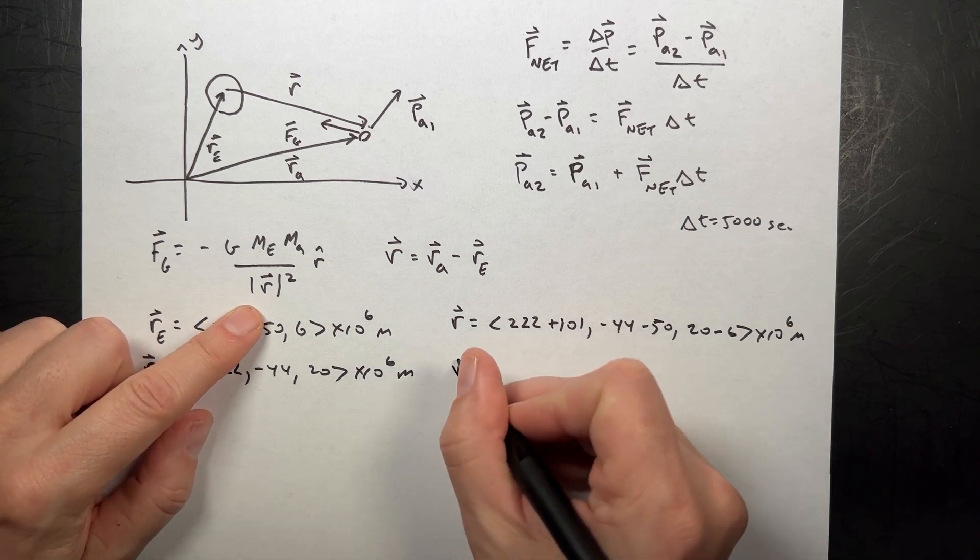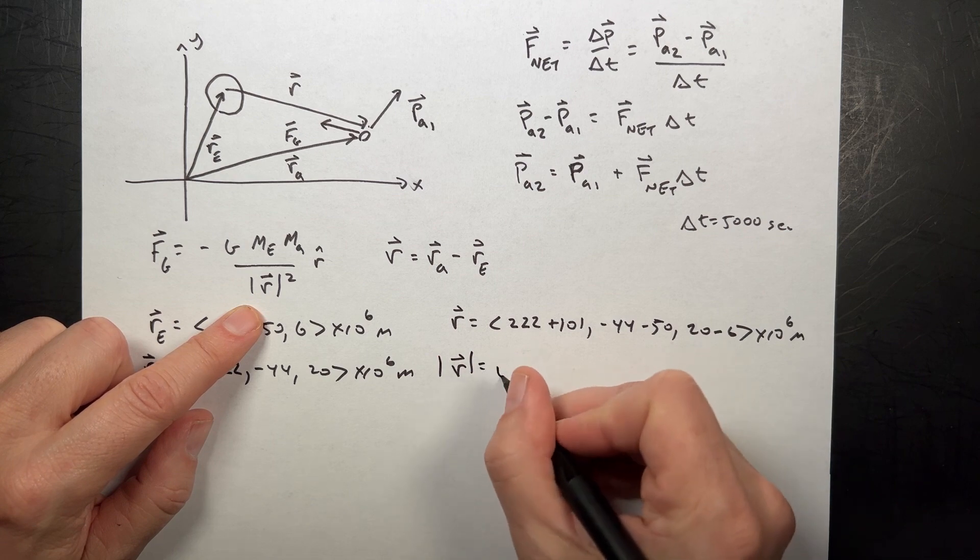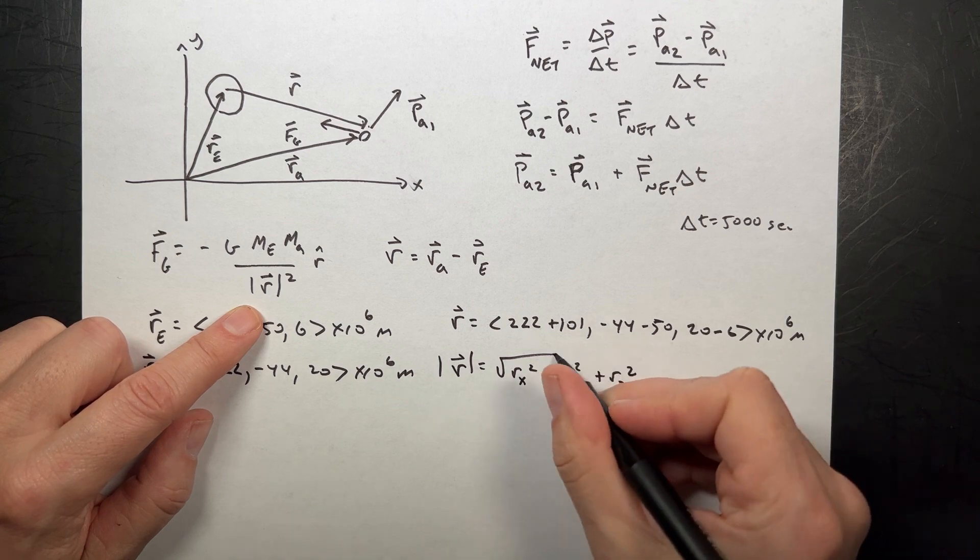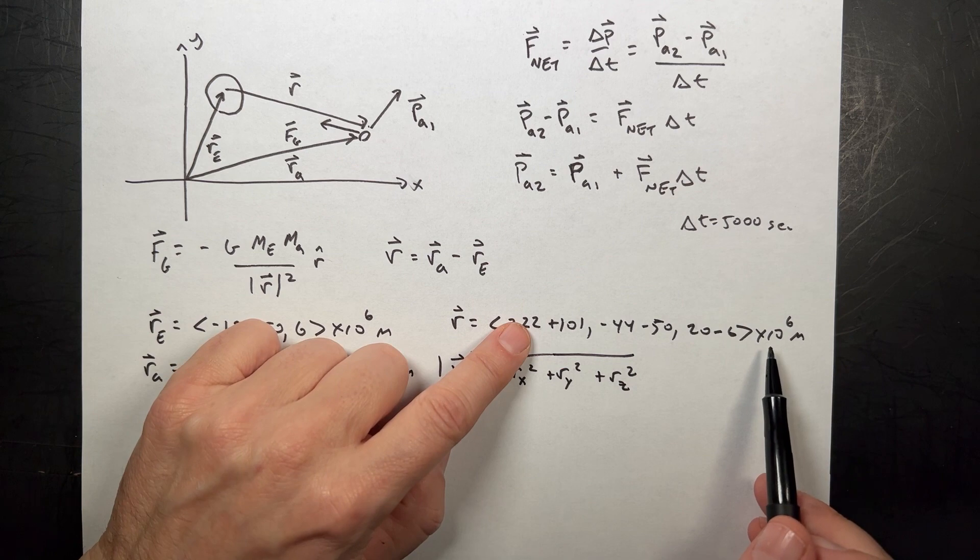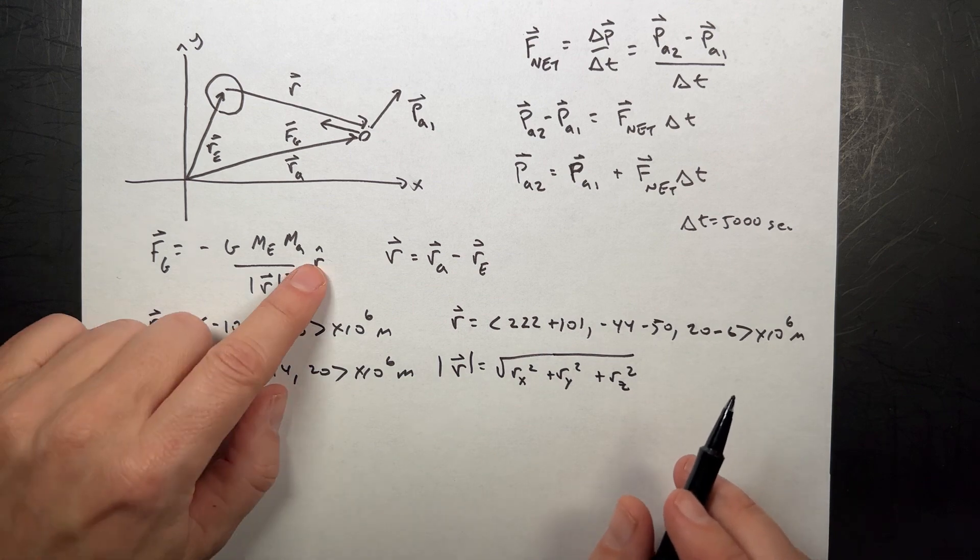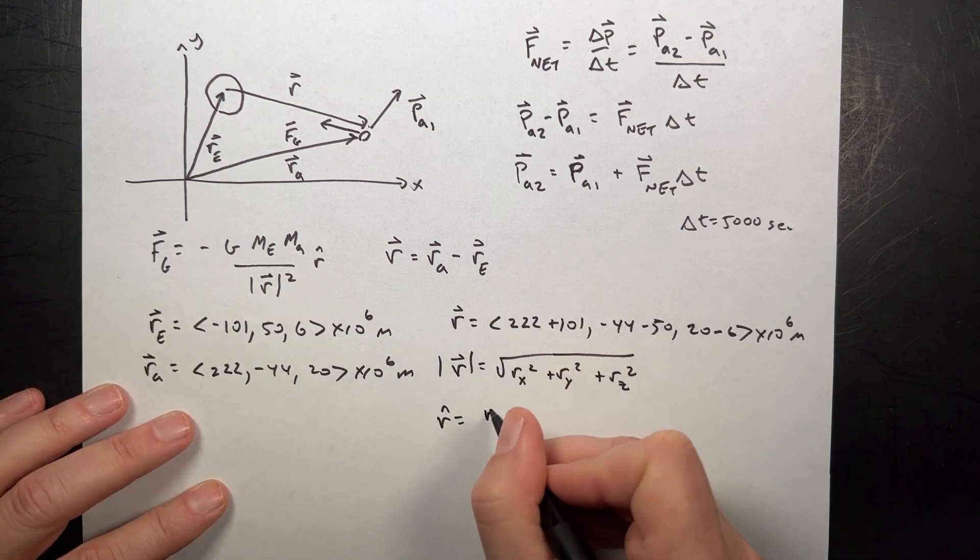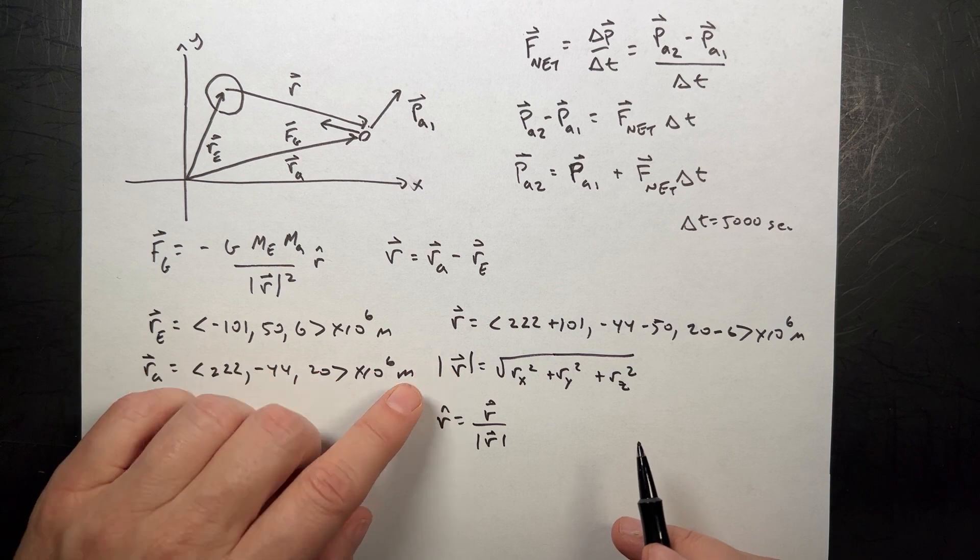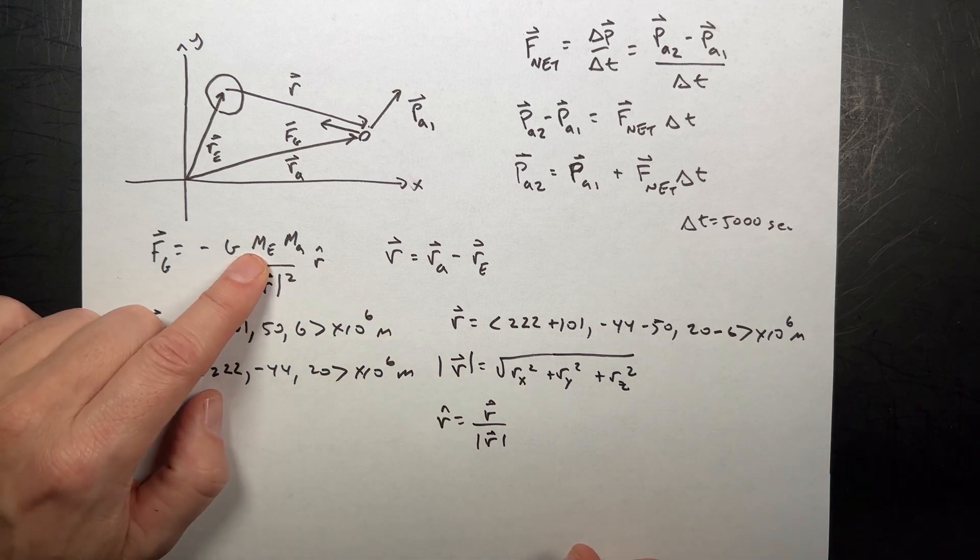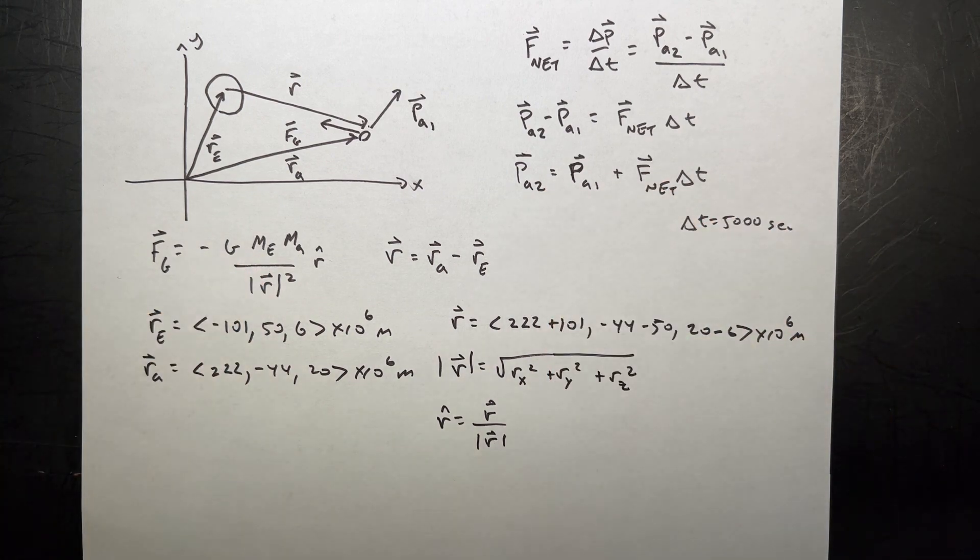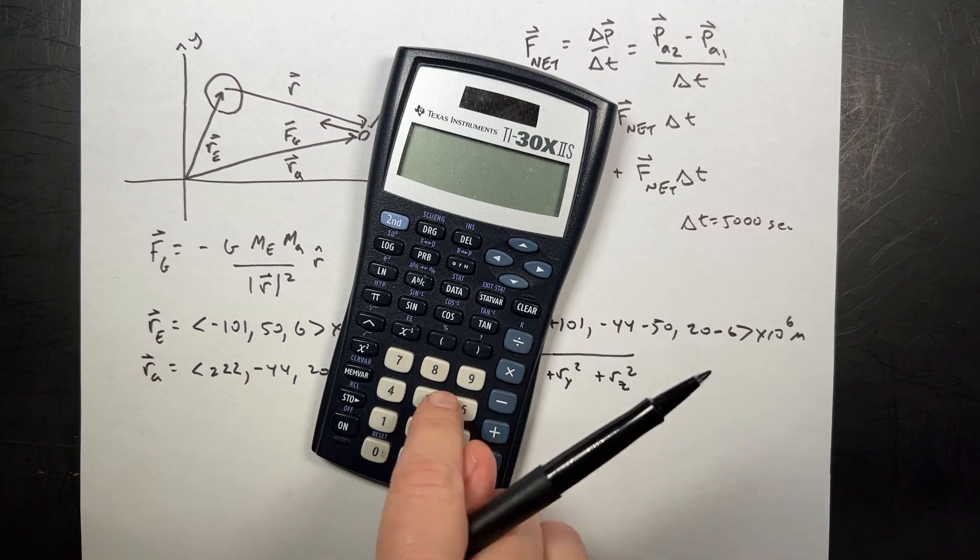Then I need to find the magnitude. R magnitude is going to be the square root of rx squared plus ry squared plus rz squared. And then I need to find r hat. That r hat is going to be this vector r divided by the magnitude of vector r. Then I can put all those numbers in here to find the gravitational force. And then I can put those numbers in here to find the final momentum. And it's a lot of number crunching, right? You can imagine getting your calculator. It's a lot of stuff.